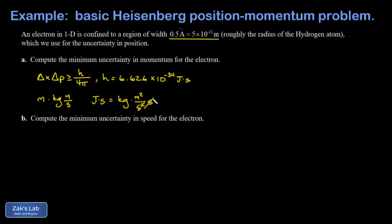To finish part A, we solve for ΔP, the uncertainty in momentum. That's ΔP ≥ H/(4πΔx). We plug in the numbers, and when I run the numbers, I get 1.055×10⁻²⁴ kilogram meters per second.